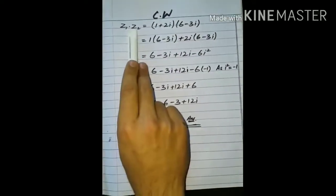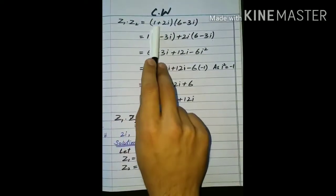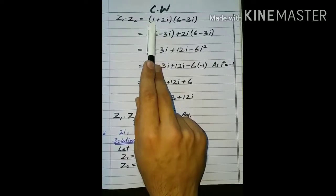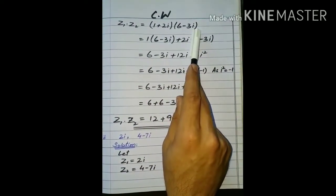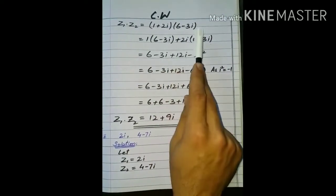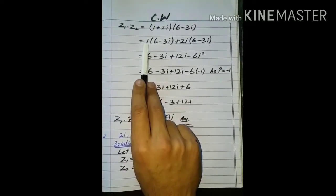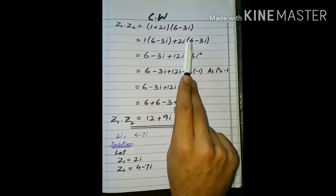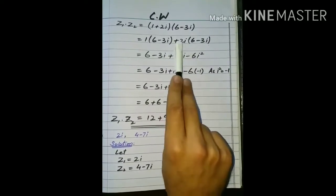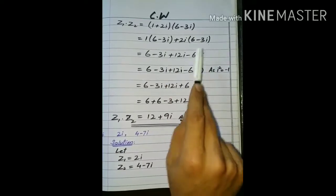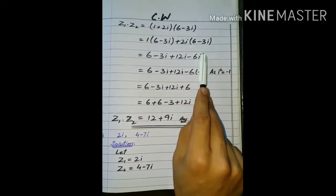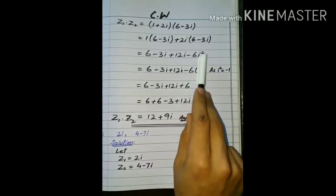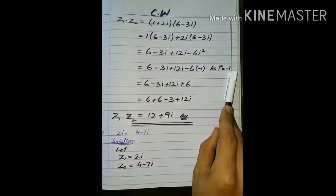اب ہم multiply کرتے ہیں Z1 multiply Z2 — multiplication کے لیے dot بھی use کر سکتے ہیں۔ Z1 کی value لکھی پھر Z2 کی value۔ ان دونوں کو multiply کرتے ہیں: 1 پورے parenthesis کے ساتھ multiply ہو جائے گا — 1 multiplicative identity ہے تو six minus three iota اپنی جگہ پر۔ پھر plus 2 iota اس parenthesis کے ساتھ multiply ہو جائے گا — two six is 12 iota، اور یہ plus minus: minus two three is 6، اور iota iota multiply ہوگا تو iota square آ جائے گا۔ iota square کی value minus 1 ہوتی ہے — یہ آپ لوگوں نے یاد رکھنا ہے۔